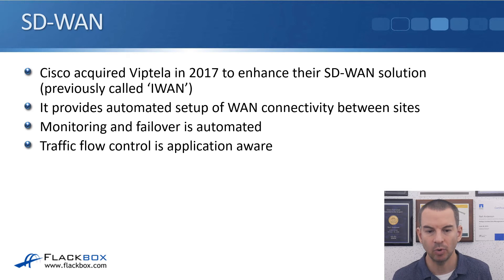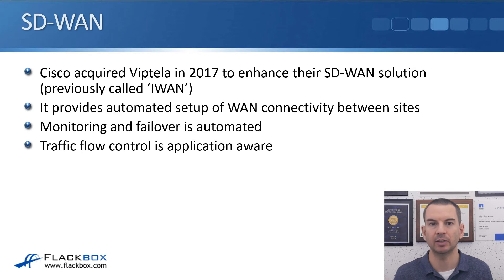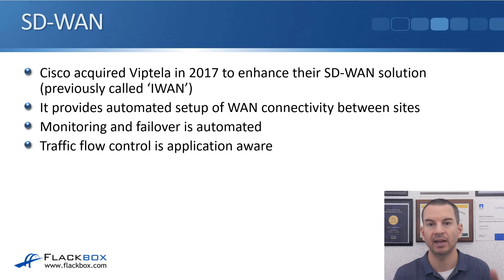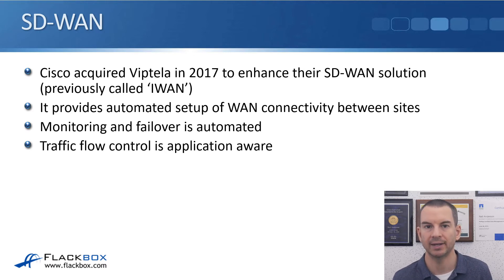With SD-WAN, the setup, monitoring, and failover are all automated, and the traffic flow control is application aware. So if a particular site has multiple WAN connections — say one going over the internet and another going over MPLS — based on your different applications' needs, SD-WAN can automatically send particular application traffic over the most suitable WAN connection.